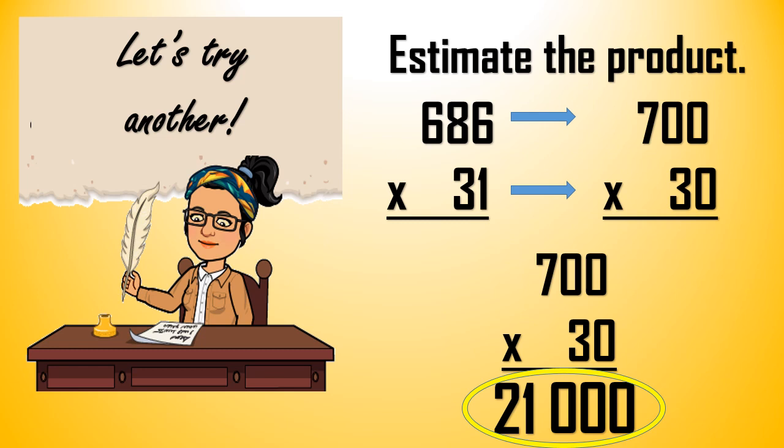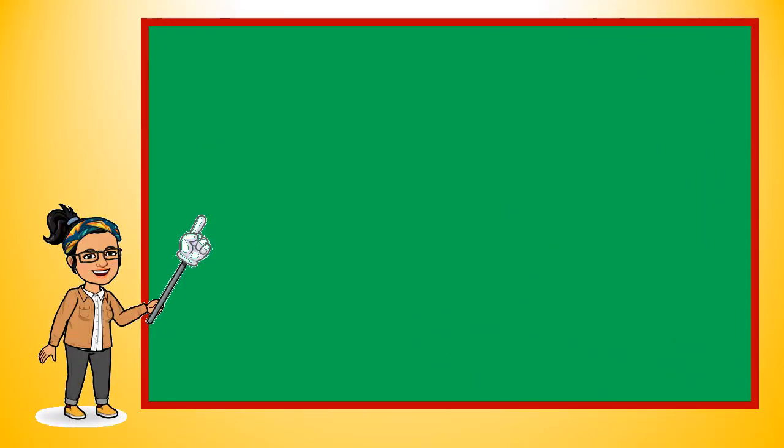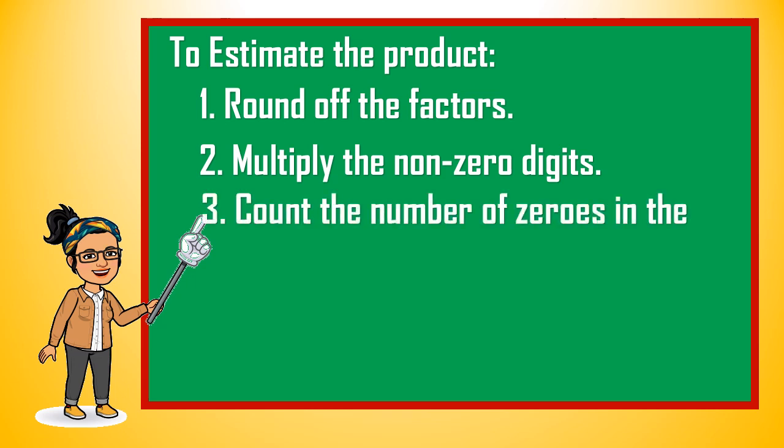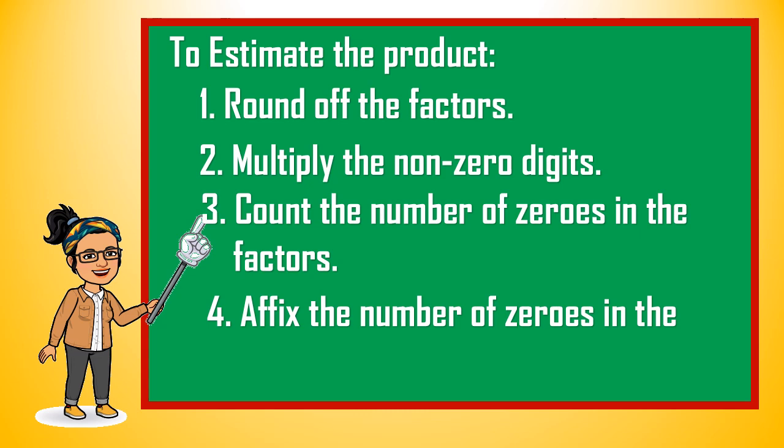Did you get that? Good job. So again, to estimate the product, our steps are: first, we round off the factors. Number 2 is to multiply the non-zero digits. Number 3 is to count the number of zeros in the factors. And lastly, number 4, we affix the number of zeros in the product.